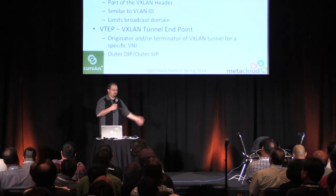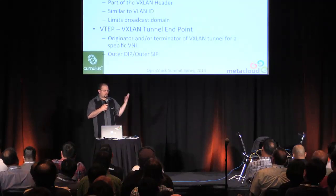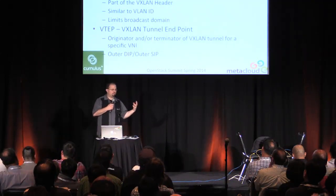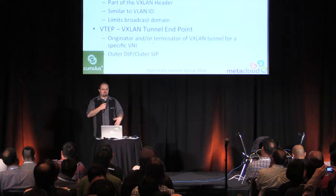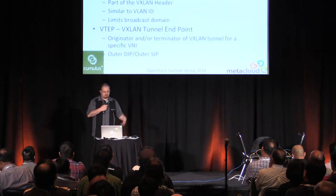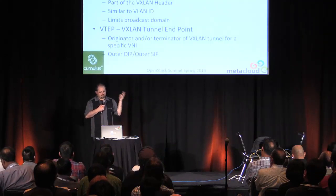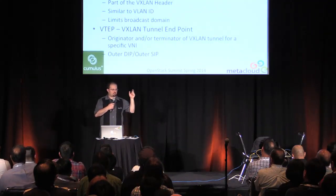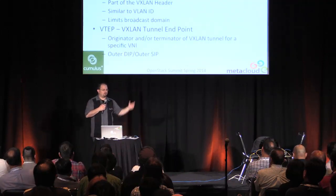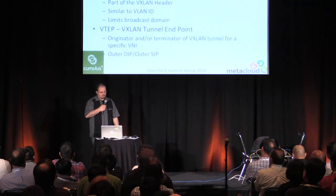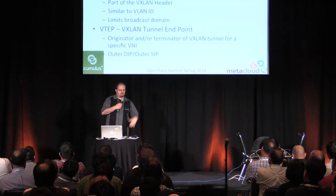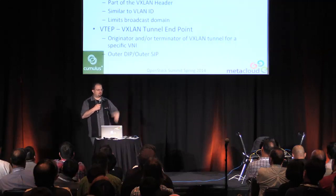The other important thing to talk about is a VTEP — a VXLAN Tunnel Endpoint. This protocol is an encapsulation protocol, so we're encapsulating something and sending it between two points — those are the tunnels, those are the VTEPs. They're the originator and terminator of that VXLAN tunnel. You have a pair of VTEPs for every VNI, and you might have multiple VTEPs for every VNI if you have multiple systems. The outer destination IP and outer source IP on the earlier slide — those are your VTEPs.